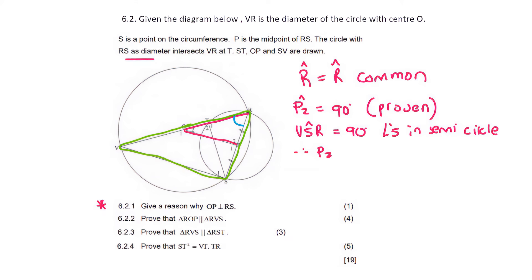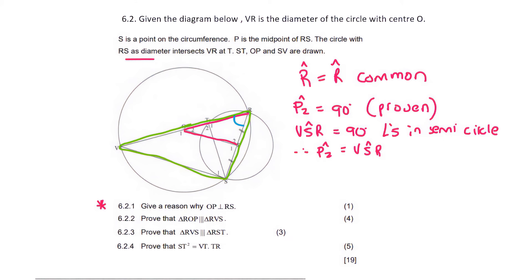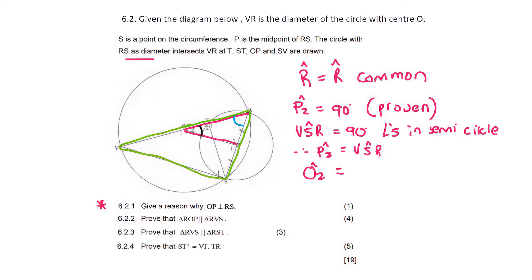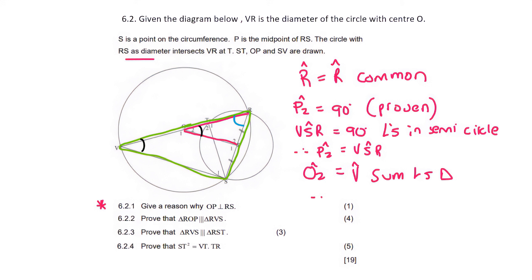Therefore angle P2 is the same as angle VSR. When proving two triangles similar, you only need to find two angles yourself, because the third one is always the same due to the sum of angles in a triangle. In the pink triangle we haven't used O2, and in the green triangle we haven't used angle V, so angle O2 equals angle V — sum of angles in a triangle. Therefore triangle ROP is similar to triangle RVS, by angle-angle-angle.